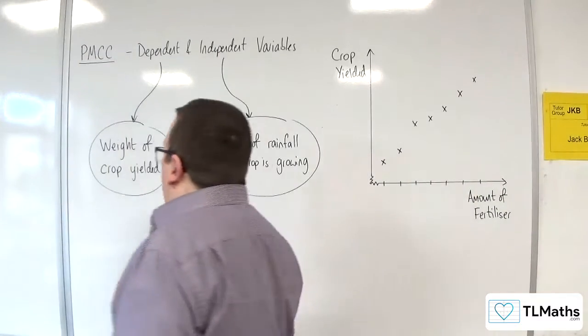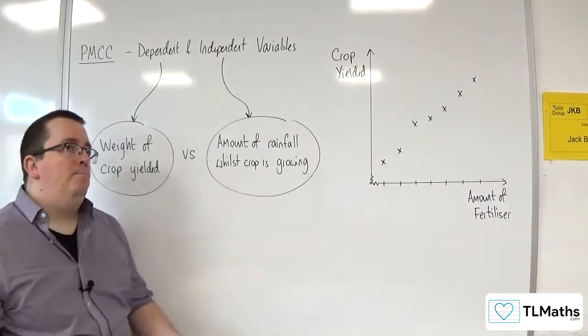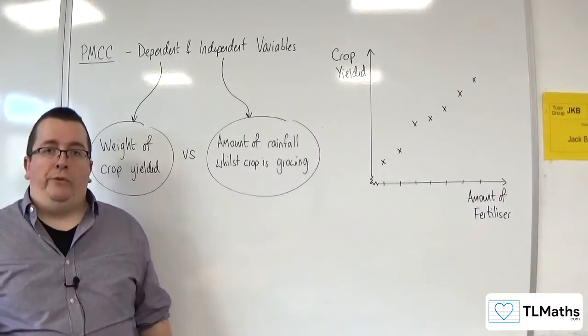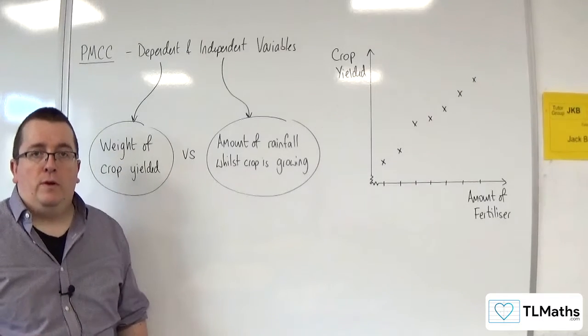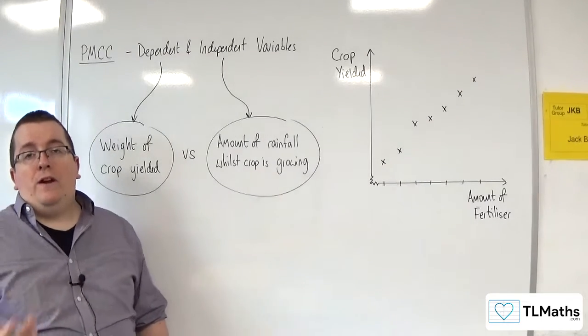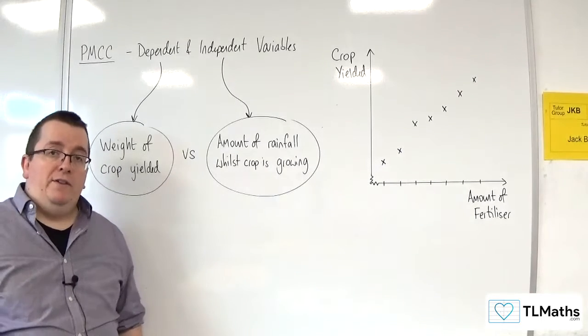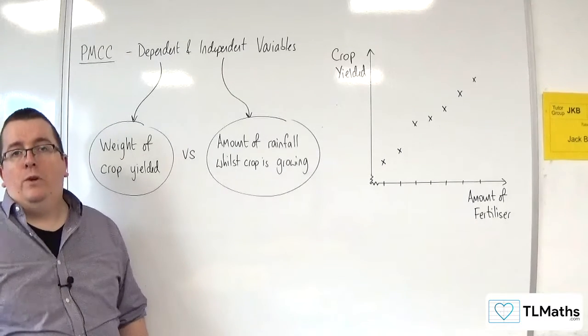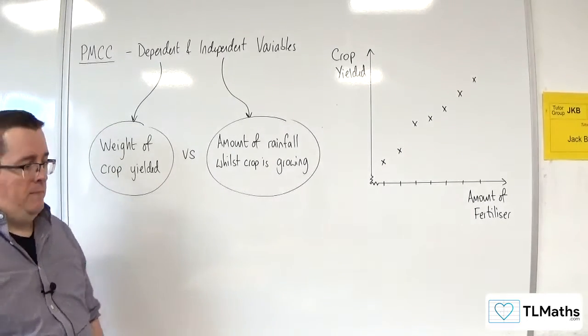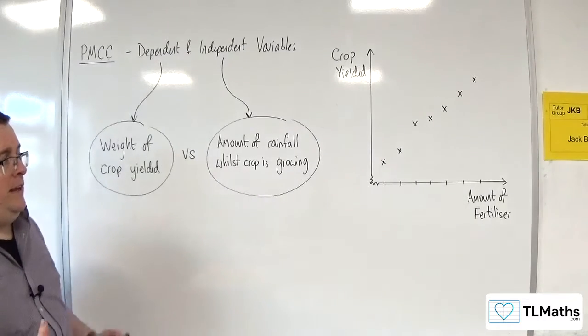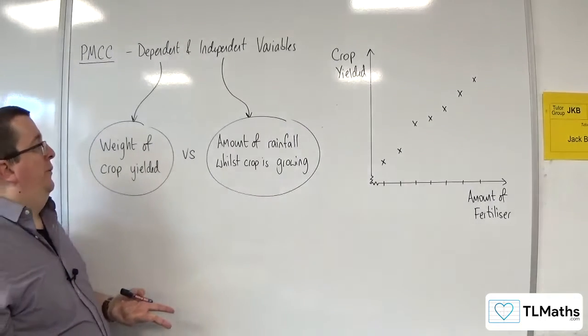Another example would be the number of goals scored in a football game. It's a variable because it can change, and it's random. It's a random variable because we can't predict how many goals will be scored. These are examples of random variables.